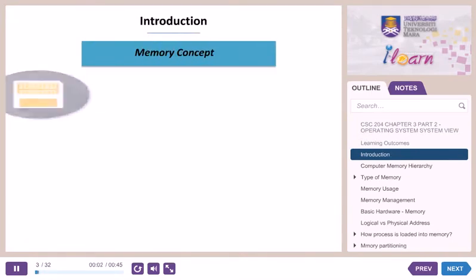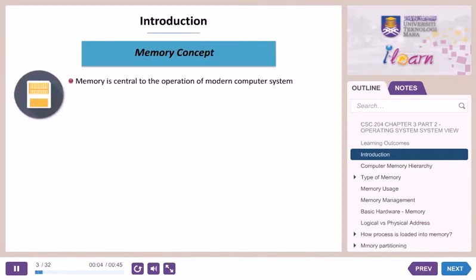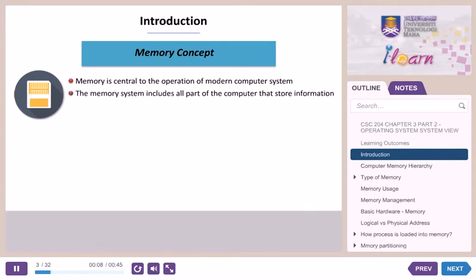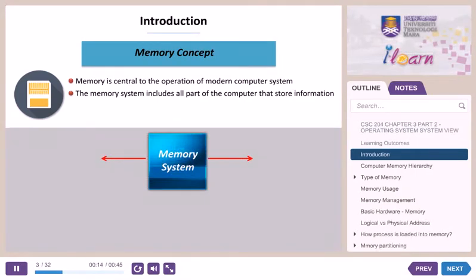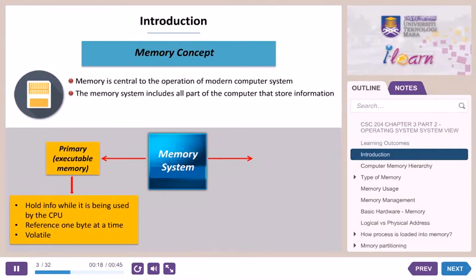Introduction. Memory concept. Memory is central to the operation of modern computer systems. The memory system includes all parts of the computer that store information. It can be divided into two parts: primary memory, which holds information while it is being used by the CPU. It is referenced one byte at a time. Primary memory is volatile memory — it stores data temporarily and loses its data or information when the PC is turned off.